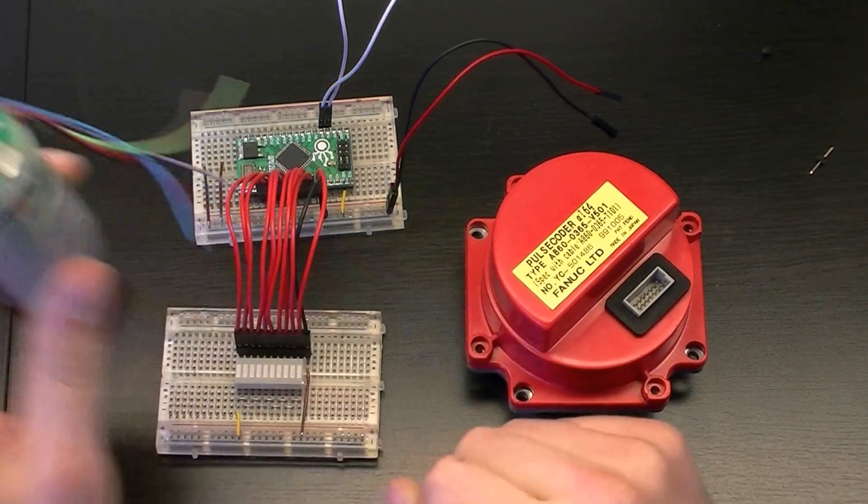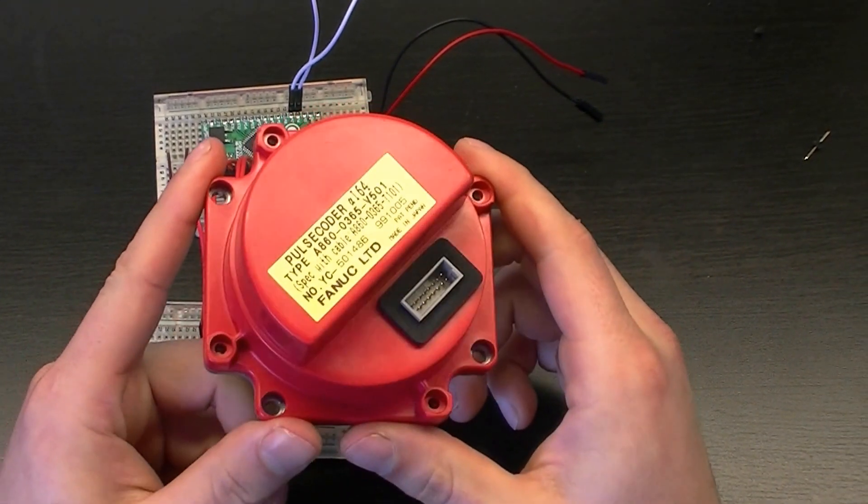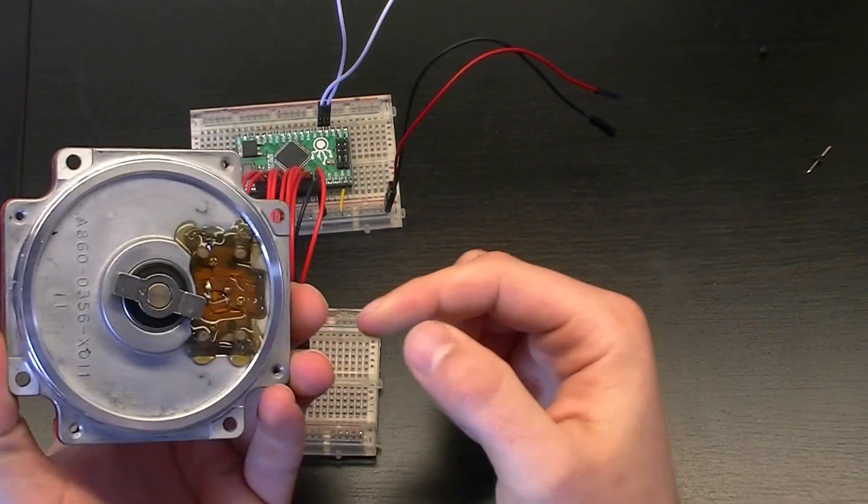Now in bigger applications, industrial applications, they have much more advanced encoders like this one here. This is off of a FANUC servo motor. Now as you can see the motor is much, much bigger.